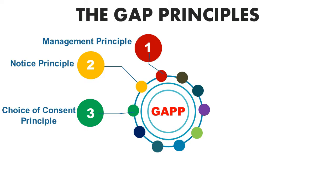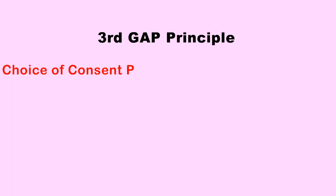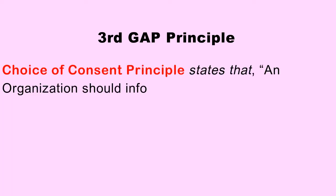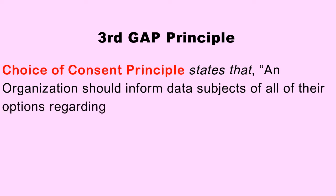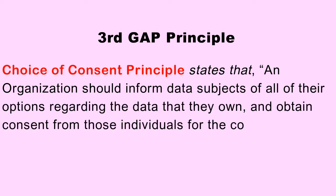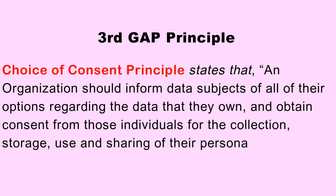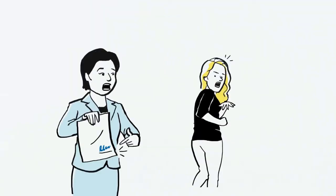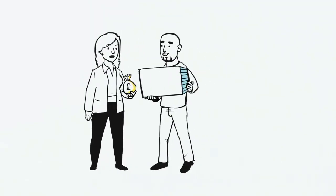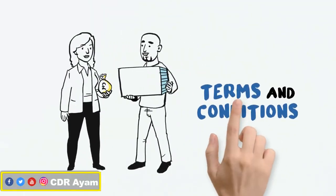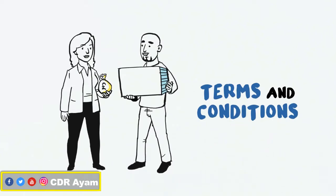The third principle is the Choice of Content principle. This principle states that an organization should inform its data subjects of all their options regarding the data that they own, and must obtain consent from those individuals for the collection, storage, use, and sharing of their personal information. The choice of content principle must always be featured in the user terms and conditions contract form.